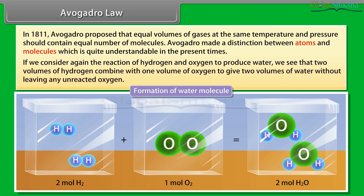If we consider again the reaction of hydrogen and oxygen to produce water, we see that two volumes of hydrogen combine with one volume of oxygen to give two volumes of water without leaving any unreacted oxygen.